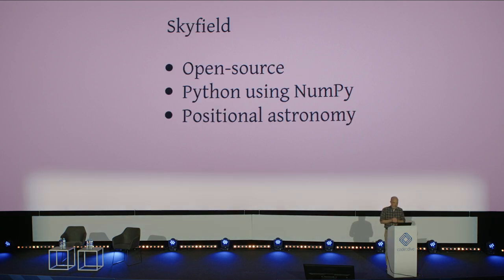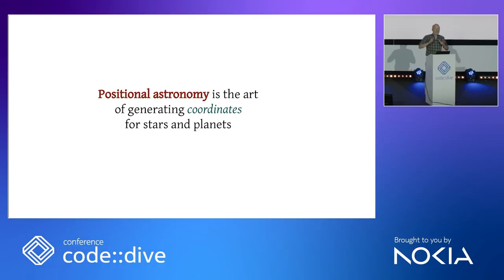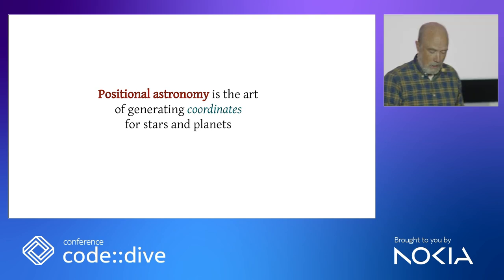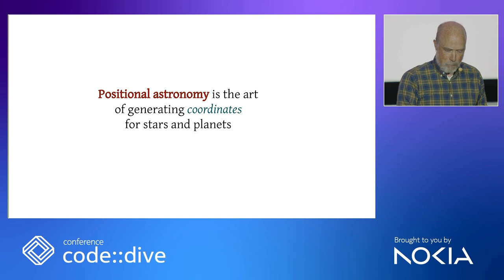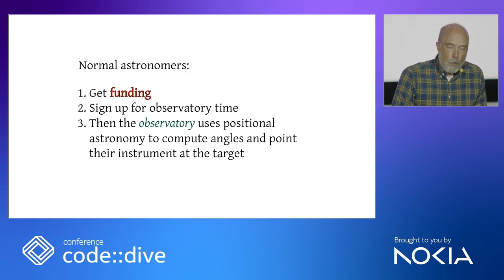Skyfield is an open source astronomy library written in Python, using the famous scientific NumPy vector library to accelerate some of its computations. I should specify, lest anyone get confused, that I am only an amateur astronomer, and it is merely a positional astronomy library. Positional astronomy is the art of generating coordinates for stars and planets. Positional astronomy is not what most astronomers do, just like most programmers don't write compilers.